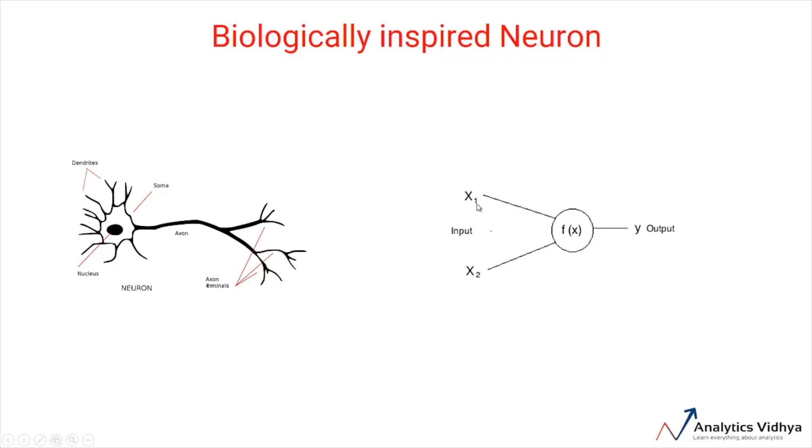For example, here, x1 and x2 are inputs to the artificial neuron. fx represents the processing done on the inputs and y represents the output of the neuron.